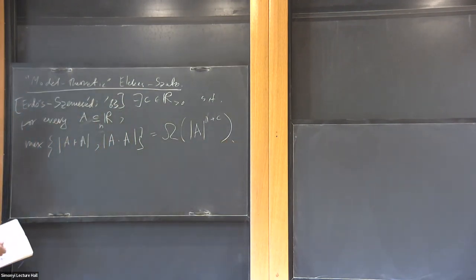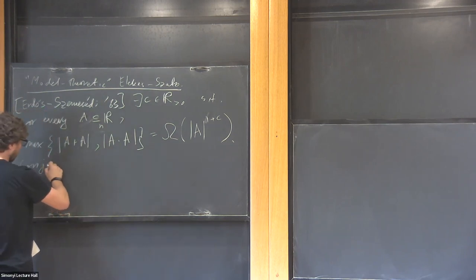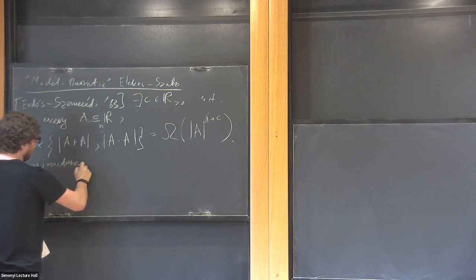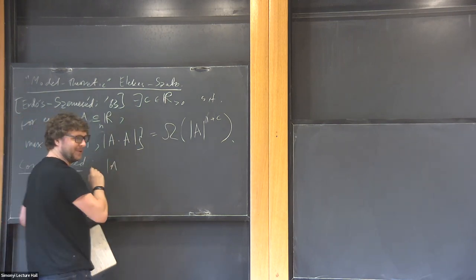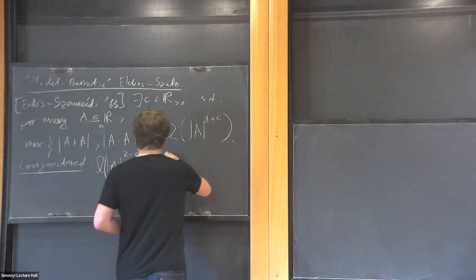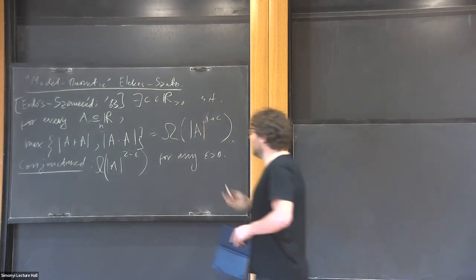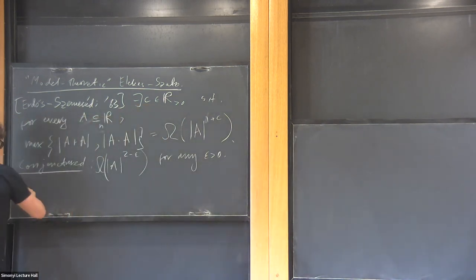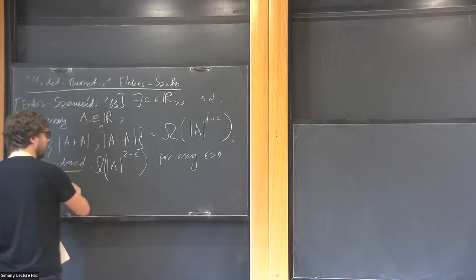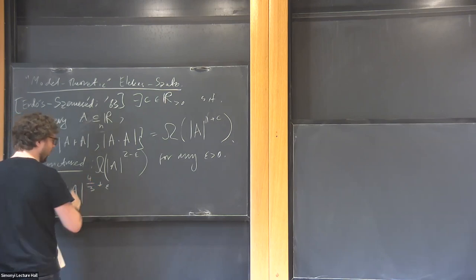It's conjectured that this constant should be 2 minus epsilon for any epsilon greater than zero, and there are many results improving the bounds. I think the current best bound, if I'm not outdated, is something of the form n to the power of 4/3 plus some very small epsilon.